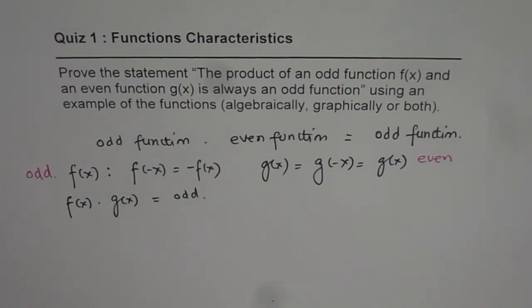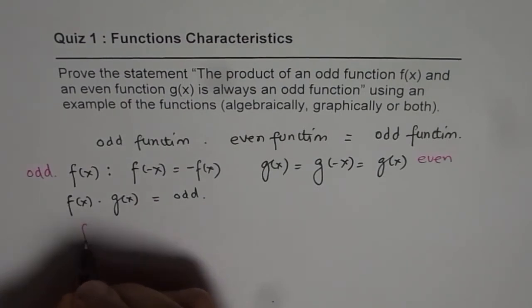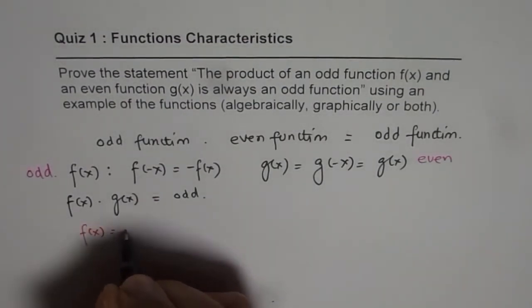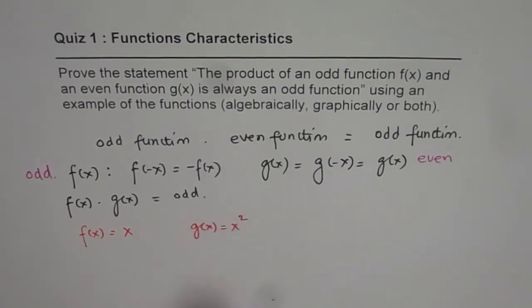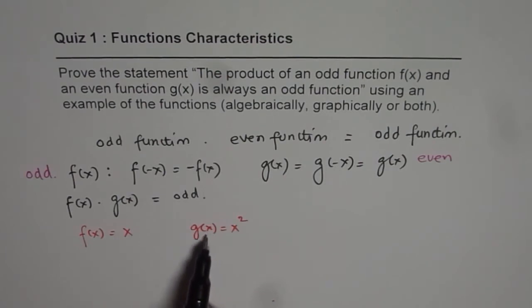Let's take an example of f(x) as an odd function. Let us say f(x) equals x and let us take g(x) equals x square. We know f(-x) is -x and g(-x) is x square. So this is even and that one is odd.